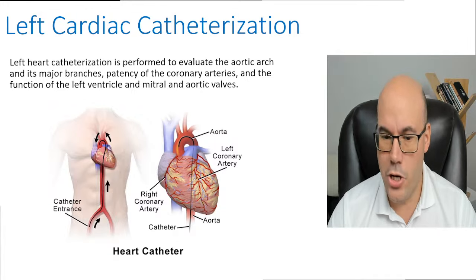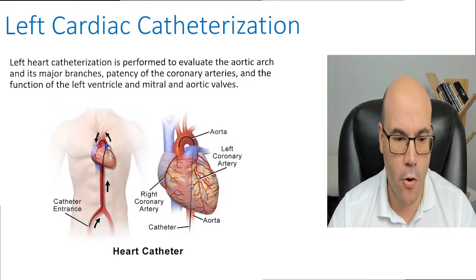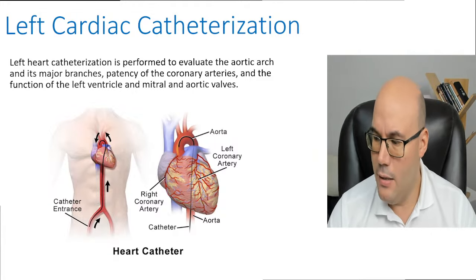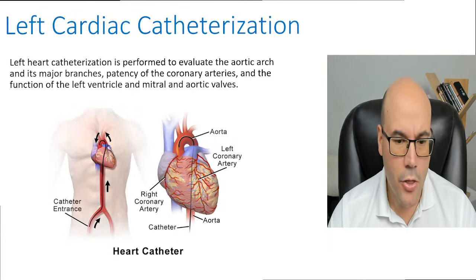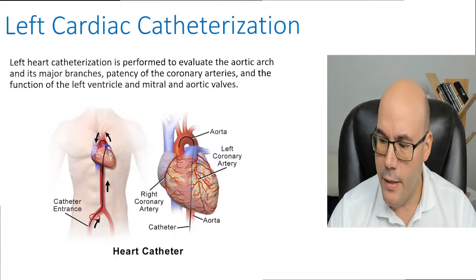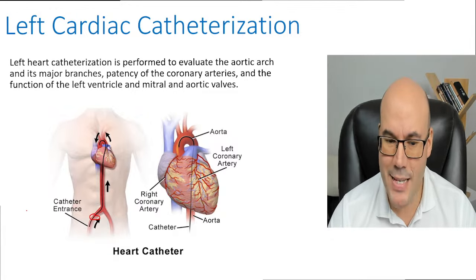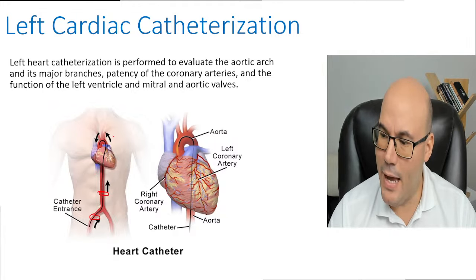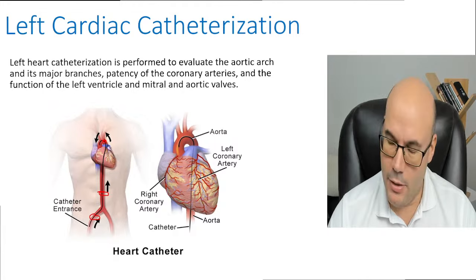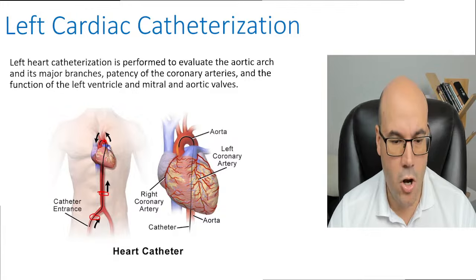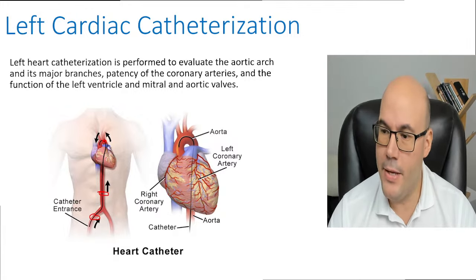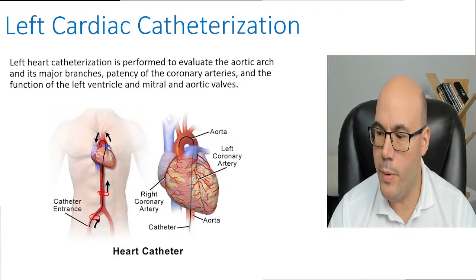How is the insertion done for a left heart catheterization? It is usually through the right femoral artery, passing through the right common iliac artery, then progressing through the descending abdominal aorta, the thoracic aorta, then the aortic arch, and finally into the ascending aorta where it meets the opening of the coronary arteries — first the right, then the left coronary artery.